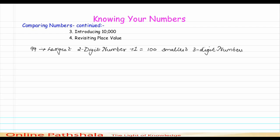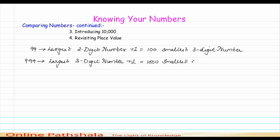Continuing the same pattern, if I take 999, you will tell me that this is the largest three-digit number. So if I add one to it, I actually get 1000, which becomes the smallest four-digit number.